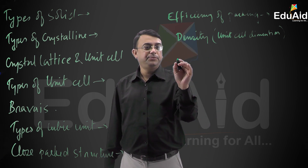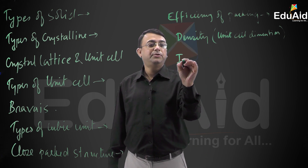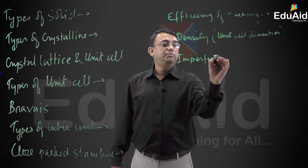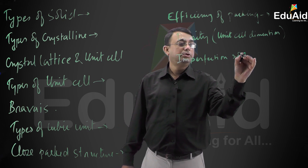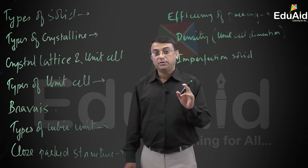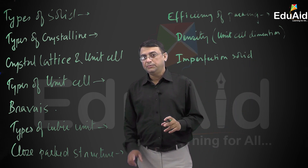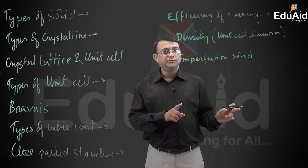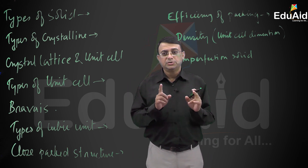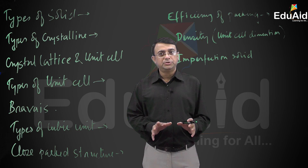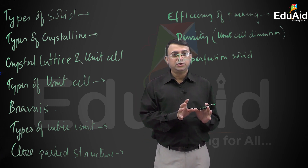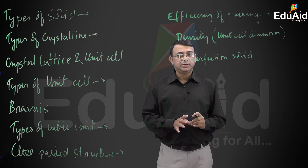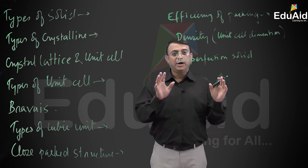The next part of solid state is called imperfection. Imperfection of solids — we have studied crystal defects. Different types of crystal defects such as stoichiometric defect, non-stoichiometric defect, point defect, and line defect have been studied in detail.